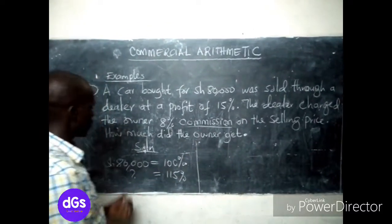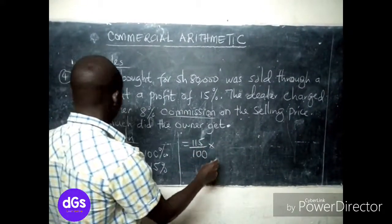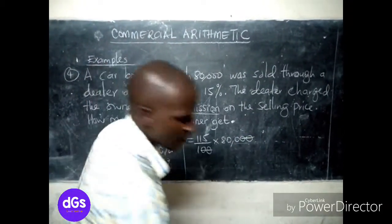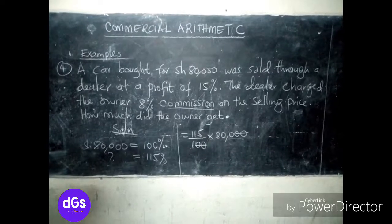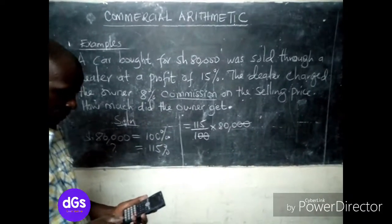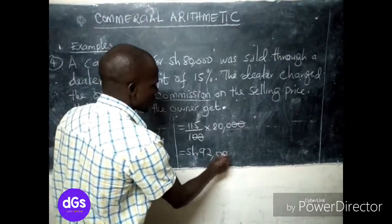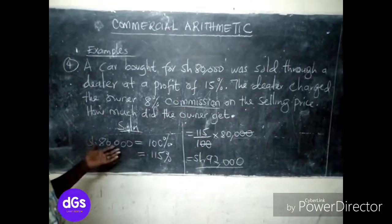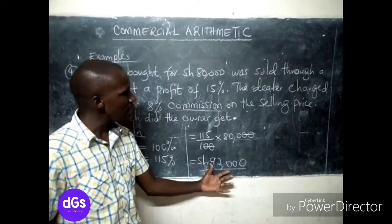We calculate: 115 over 100 times 80,000, which gives us 92,000 shillings. This is the selling price. The profit made is 12,000 shillings.